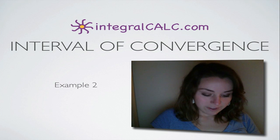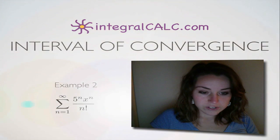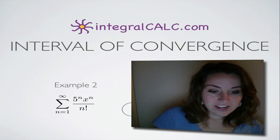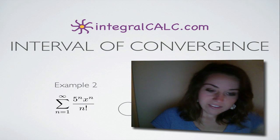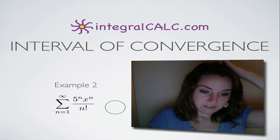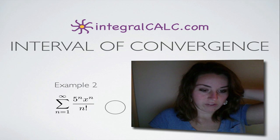We're going to be doing another example today of interval of convergence. The sum that we have today is 5 to the n times x to the n divided by the quantity n factorial.